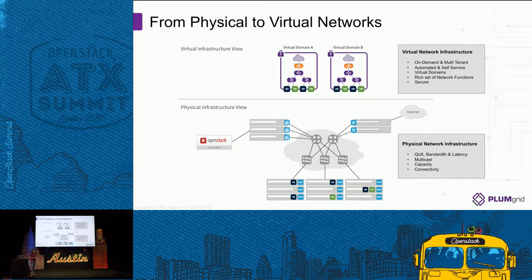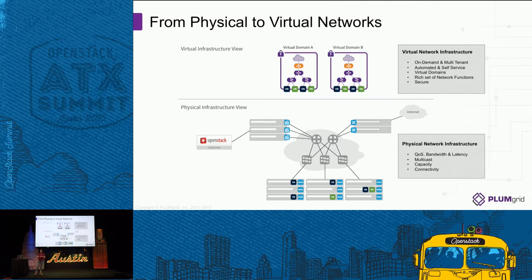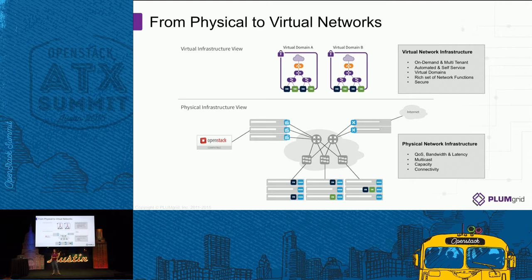While the operational team, especially in the network operation center, is very used to operating the physical bottom layer, the challenge is translating what they know about the physical layer up into the virtual layer. At the bottom you have individual components you can log into, troubleshoot, check ports, and figure out if traffic is flowing. But at the top you have abstractions — a logical router, a logical switch — that don't physically live in one spot. They can live distributed across tens or hundreds of components. So it's quite different to operate a single device at the bottom versus a much larger number of distributed entities at the top.